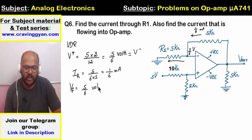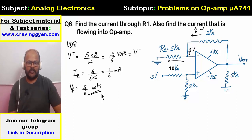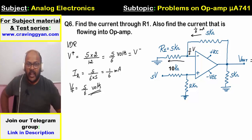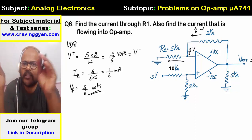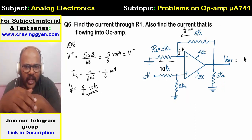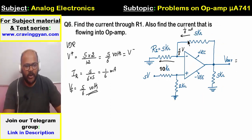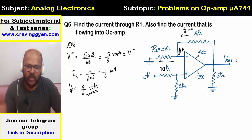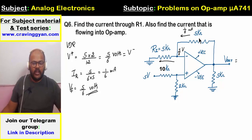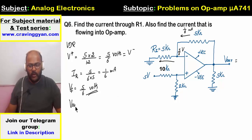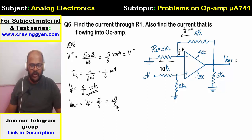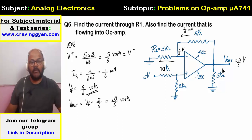Vout = VF + V_inverting = 5/6 + 5/6 = 10/6 volts. Like distributing coconuts — the total voltage is shared across the two 5k resistors. So Vout = 10/6 volts.